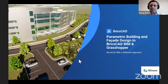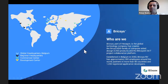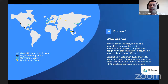Let me introduce our company first. Bricsys is a global technology company that makes the BricsCAD family of CAD products for building design, construction, manufacturing, and a 24/7 collaboration platform. Our team is based in Ghent, Belgium, but we are growing globally. I'm based in the New York City area and Sagar is logging in from Singapore, so together with Europe we are connecting three different time zones today. Bricsys is part of Hexagon, a global leader in digital reality solutions combining sensor, software, and autonomous technologies.